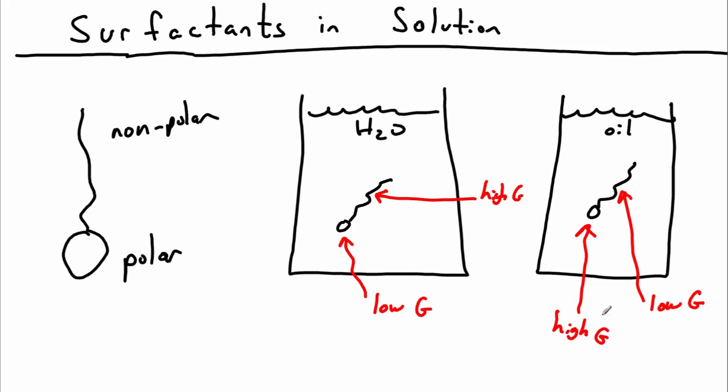So surfactants can deal with this problem of having two different natures in two different ways. Let's look at both of them. The first way surfactants can deal with their sort of split nature is by adsorption, that is, sticking to a surface.